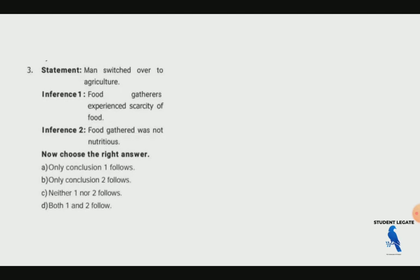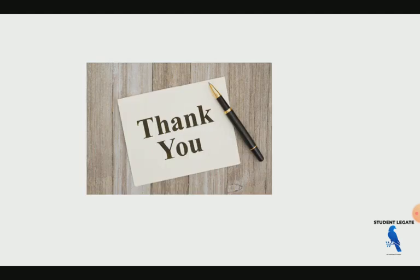When man switched over to agriculture, food gatherers experienced scarcity of food. So when food gathering is replaced, scarcity of food occurs. Therefore option A is correct. If you have finished the video, please like, share, and subscribe. Thank you.